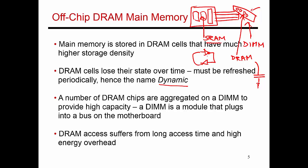In static random access memory, once you place data, it does not have to be refreshed. But for the off-chip main memory system, because you have to periodically do this refresh process, it's referred to as dynamic random access memory. You could have 32, 64, or 128 chips all coming together to provide a large high-capacity memory system. You can have multiple channels coming out of the CPU, each channel accommodating multiple DIMMs, and each DIMM has many memory chips on both the front and back side. All of these chips collected together give you a very high-capacity memory system.